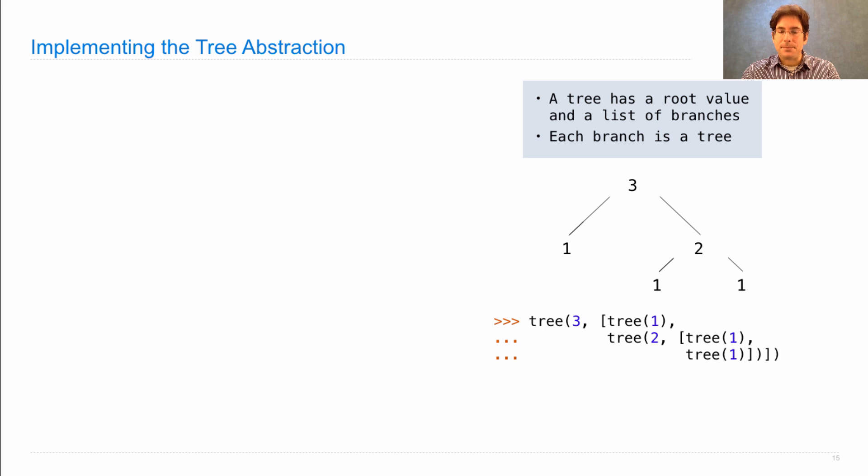So here's that example. The way we'll actually create this example using a Python expression is to say that I want a tree with a root value of 3 and a list of branches, where one of the branches is a tree with a root value of 1, and it's a leaf. It has no branches. So that's this one here. And then the other branch is a tree rooted at 2, which itself has two leaf branches, tree 1 and tree 1. Now when we call this tree function in this nested expression, some value that's built-in has to be generated. And in this case, it will be nested lists. So the implementation of our tree abstraction will be using nested lists.